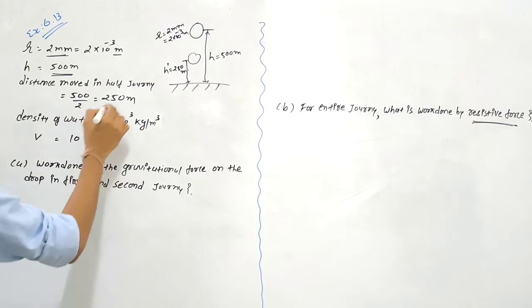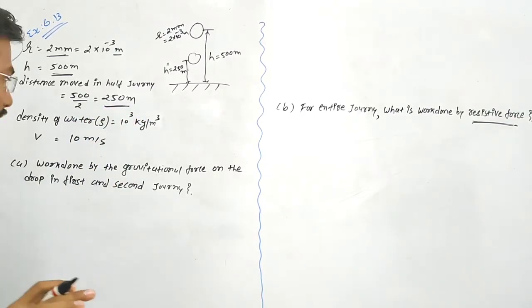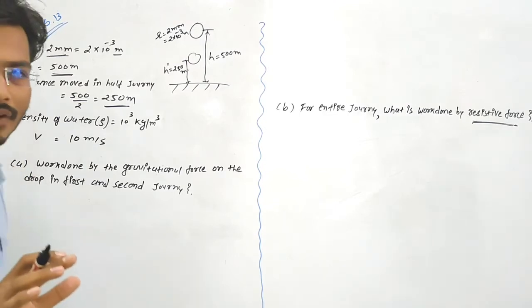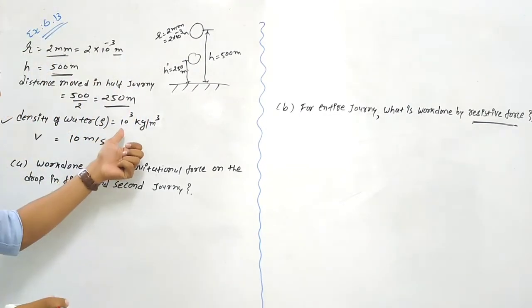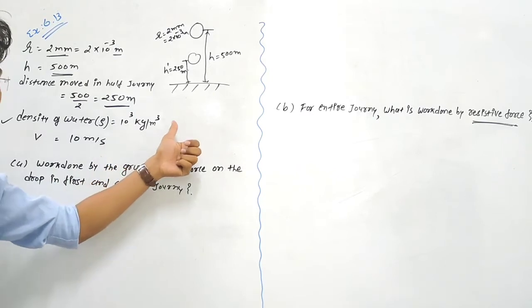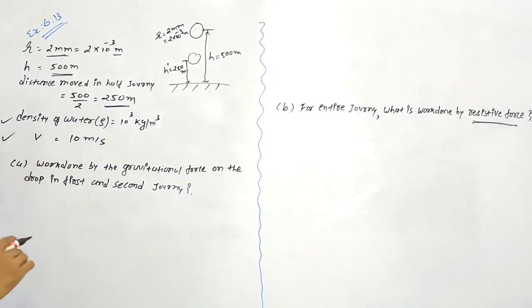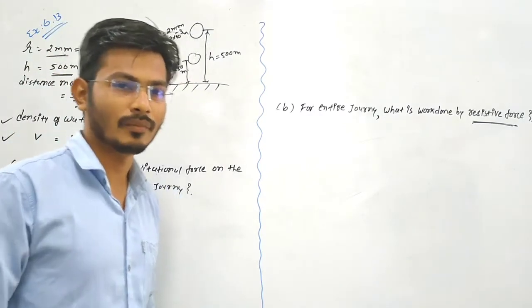So that is why we are writing here 250 meters for the midpoint. The density of water, rho, we consider as 10³ kg per meter cube. The terminal velocity V is given as 10 meters per second.